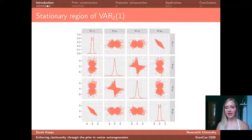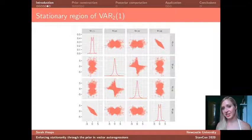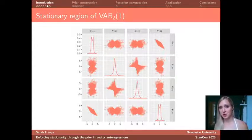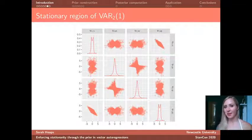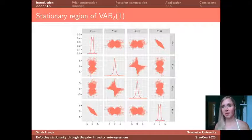So what does this look like? Well it looks something like this. So if you just ignore the plots on the diagonal and concentrate on the off diagonal plots, what these are essentially showing you are two-dimensional slices through the four-dimensional stationary region. And what you can hopefully see is that the kind of relationships this conveys between the different elements of my autoregressive coefficient matrix are really quite complicated. And there certainly isn't going to be any standard distribution which sits upon that space.